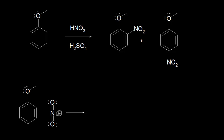So far we've looked at electrophilic aromatic substitution reactions involving only benzene. But what happens when you start with a substituent already on your benzene ring? We'll look at methoxybenzene, which has a methoxy substituent on the ring. If we react methoxybenzene with concentrated nitric and sulfuric acids — a nitration reaction — this will install a nitro group onto the aromatic ring. The presence of that methoxy substituent is going to affect where that nitro group goes on your ring.